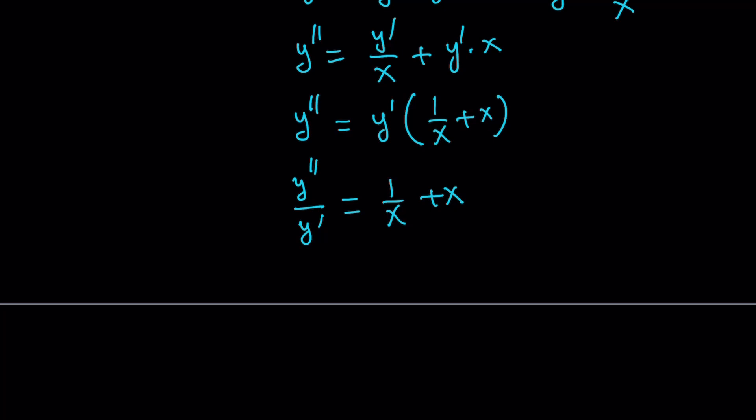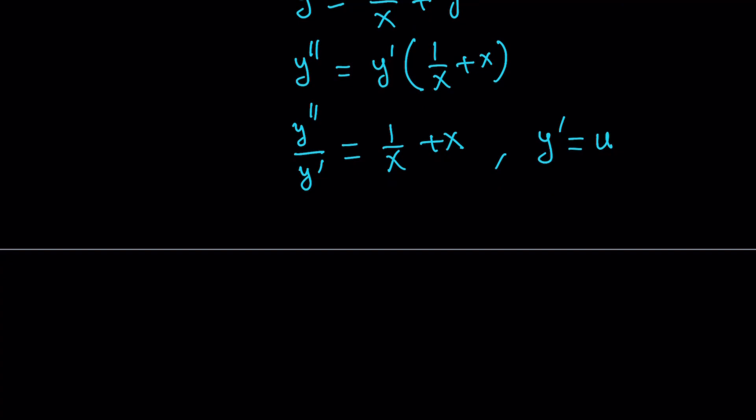Now, at this point, I have the second derivative and the first derivative, but I don't have the function itself, which is fine. But I don't want to deal with the second derivative. So let's go ahead and use substitution one more time. I think one of the things that I really like about the solution is, even though it's a long one, we're using a lot of substitution. So anyways, let's go ahead and say, set y prime equals u. And that gives us u prime over u equals one over x plus x.